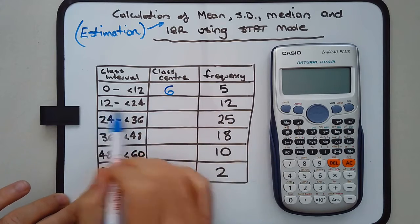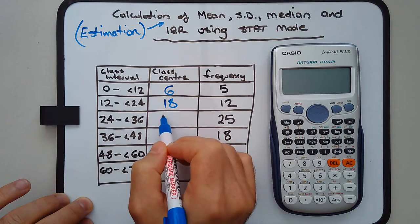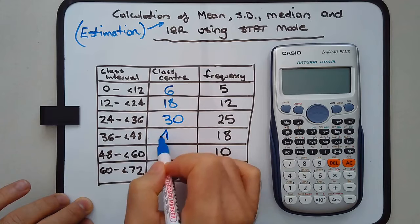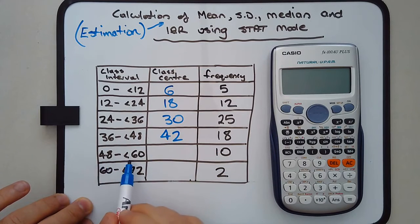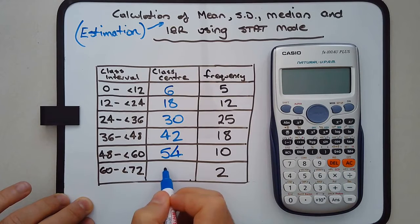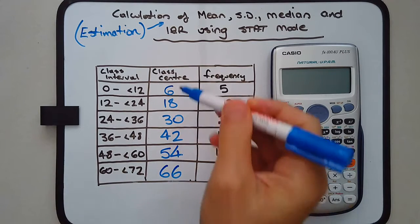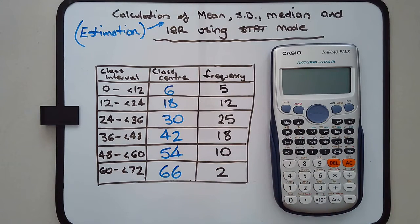The midpoint of 12 and 24 is 18. 24 and 36 will be 30. 36 and 48 will be 42. 48 and 60 will be 54. And 60 to 72 will be 66. So we're just going up by 12s each time. We have our frequencies already filled out.